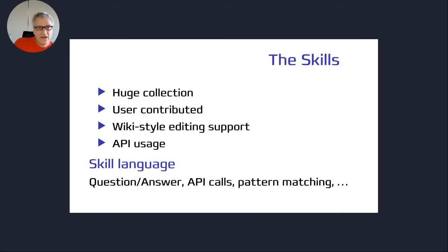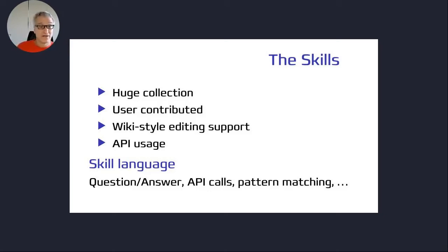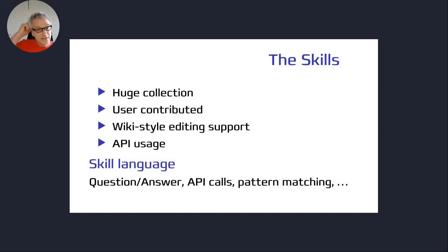The skills — other smart speakers also call them skills — are typically question and answer content. There's a huge collection of user-contributed skills. Unfortunately there is quite a variety of quality, similar to badly written wiki articles, because everyone can create their own skills. That's the reason we have vetted system skills and a reduced default set. But in principle there are a lot of skills out there.